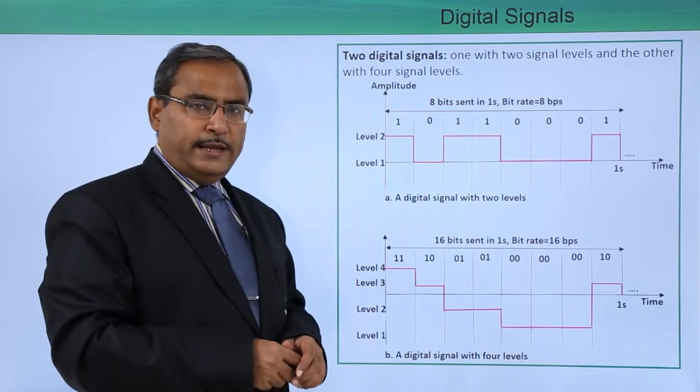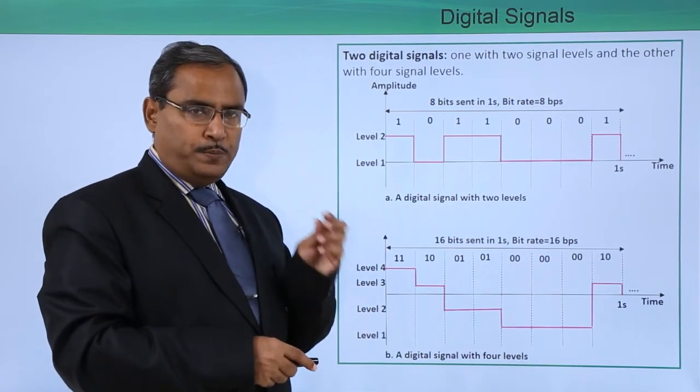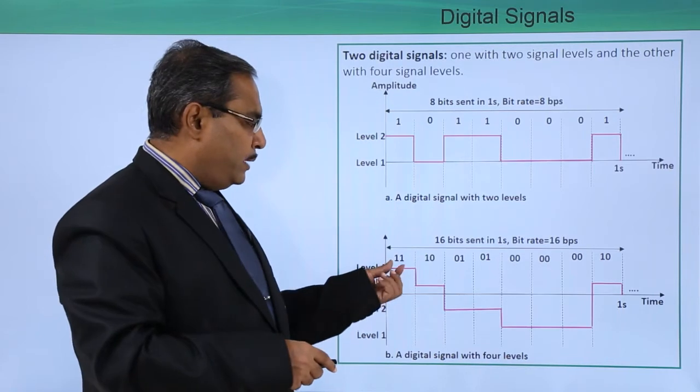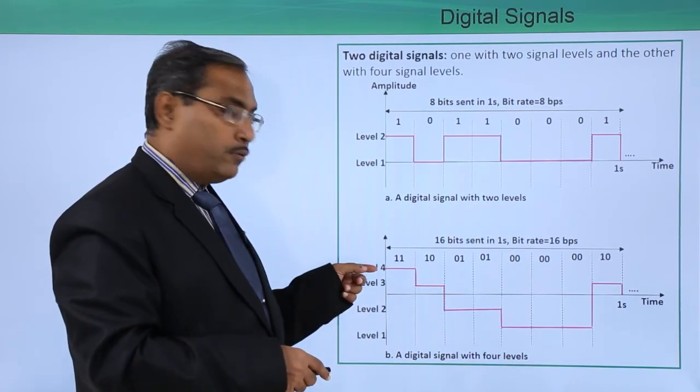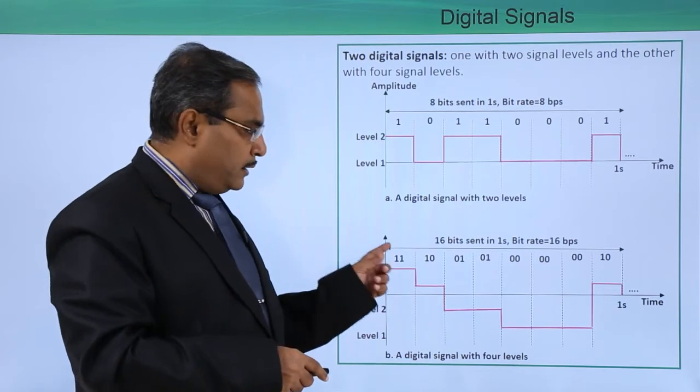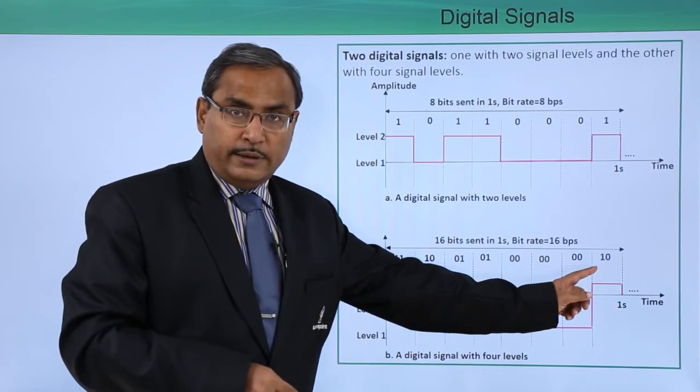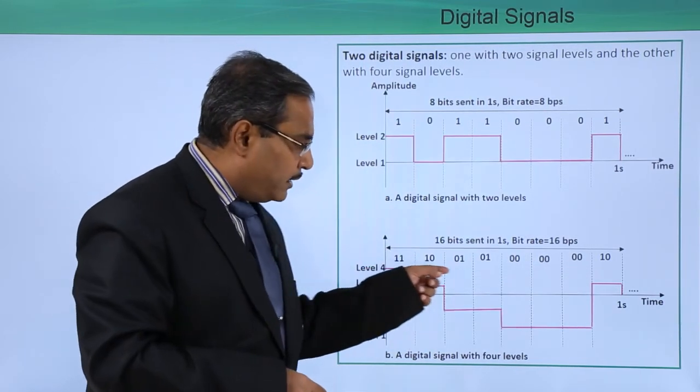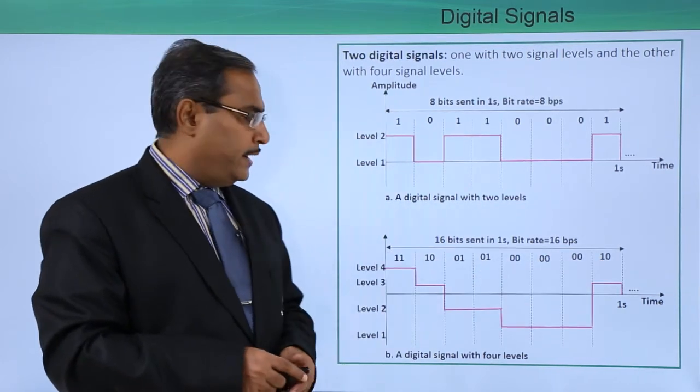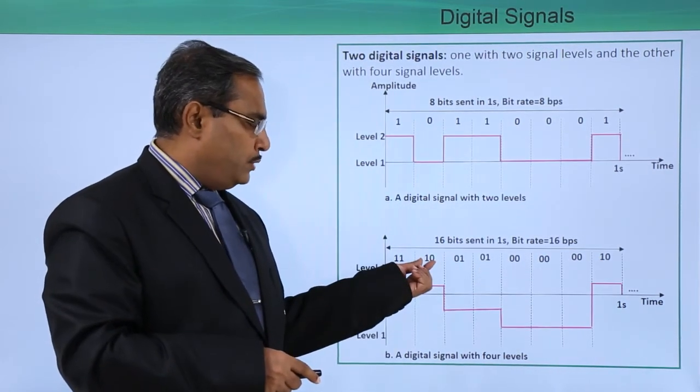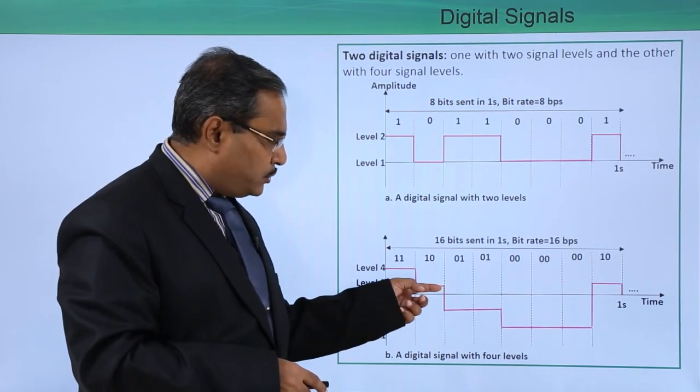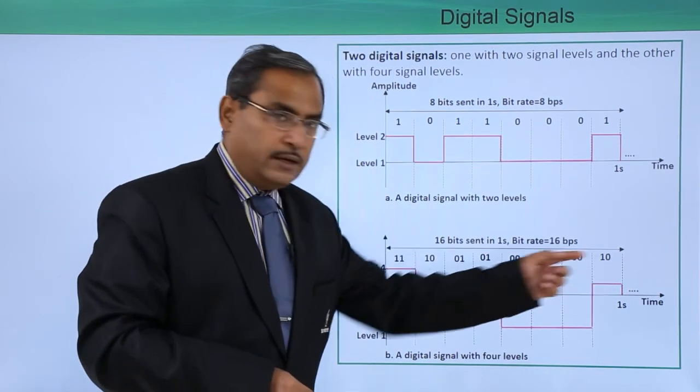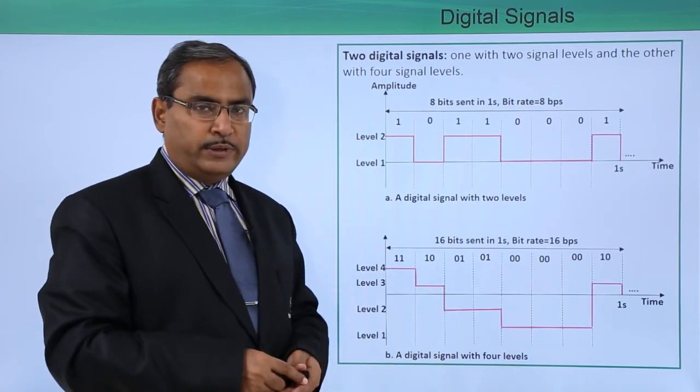Now consider here, we have done the clubbing or grouping of 2 bits. Whenever we are having 11, then we are having level 4. In case of 10, we are considering level 3. Whenever 10 is there, we are considering the respective signal with level 3.